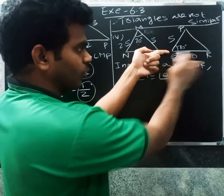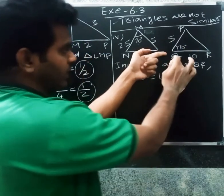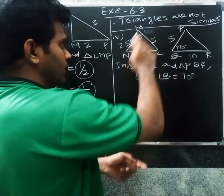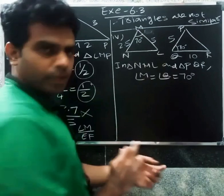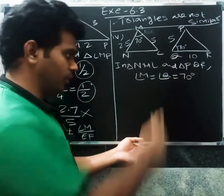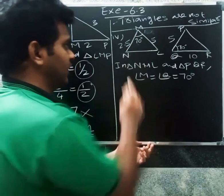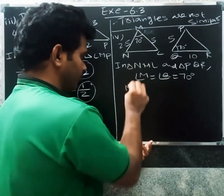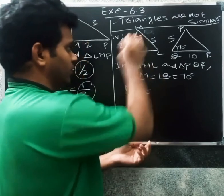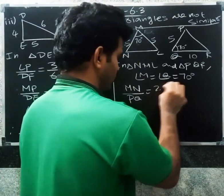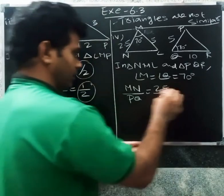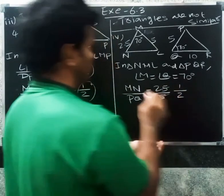Checking included sides: MN by PQ equals 2.5 by 5, cancel to 1 by 2. The included sides around the equal angles are in the same ratio 1 by 2.